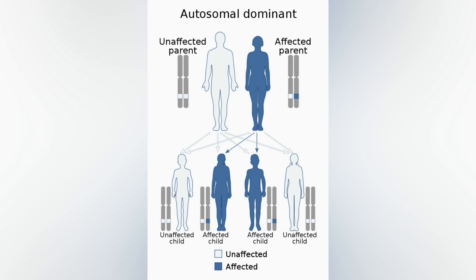VWD type 2 is the second most common type of the disorder and has mild to moderate symptoms. The factor is named after the Finnish physician Erik Adolf von Willebrand, who first described the condition in 1926. Guidelines for the diagnosis and management of VWD were updated in 2021.